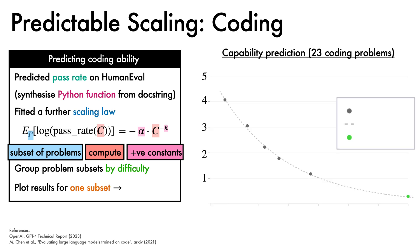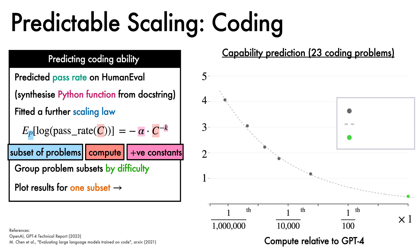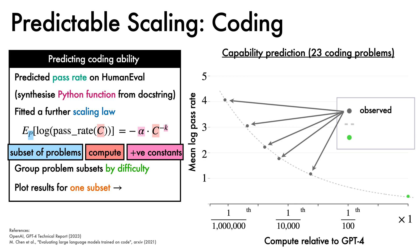Here is the plot for a subset of 23 coding problems, again with compute relative to GPT-4 on the x-axis, and this time with mean log pass rate on the y-axis. The grey dots are performances observed for smaller models. By examining results over a range of lower compute scales, the scaling law makes a prediction, shown as the dashed line, which accurately forecasts the capability of GPT-4.